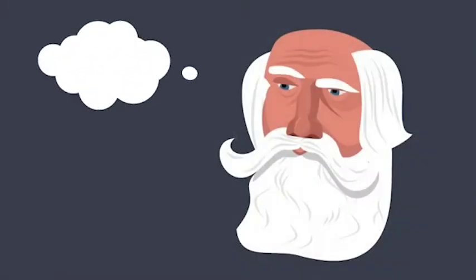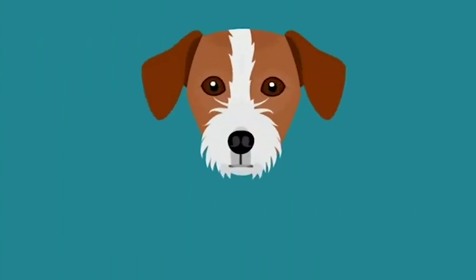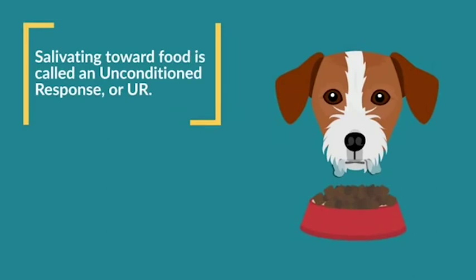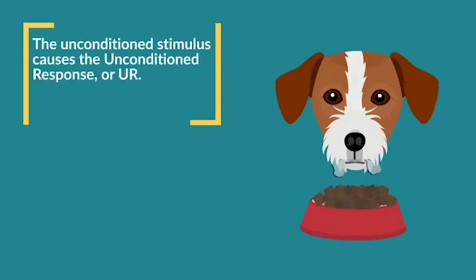This observation led Pavlov to design an experiment to test this phenomenon. He first showed that dogs would salivate when food was placed in front of them, just like how we salivate when we see our dinner. Salivating towards food is an unconditioned response, or UR. This is because it is outside of an animal's control — we don't have to do anything to elicit that response. The unconditioned stimulus, or US, is what causes the unconditioned response. In this case, that is food. Food is biologically relevant — it's important to our survival — so you don't have to do anything to get an animal to like food.